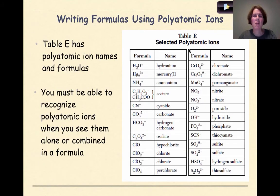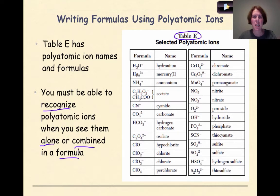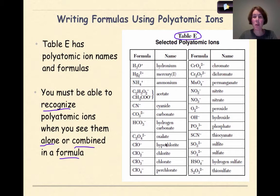All of your polyatomics can be found on Table E of your reference table. You must be able to recognize your polyatomic ions when you see them, either alone or combined in a formula. When you look at a formula and think it might be a polyatomic, it is always in your best interest to go to Table E to identify what polyatomic it is, what the charge is, and the name of it. Table E is a very good reference table to know how to use.